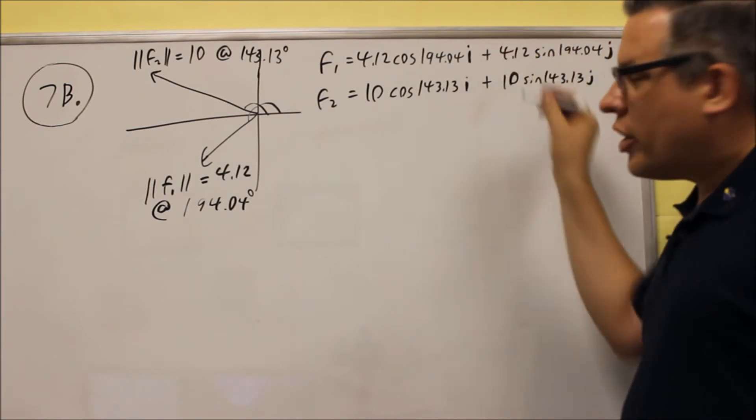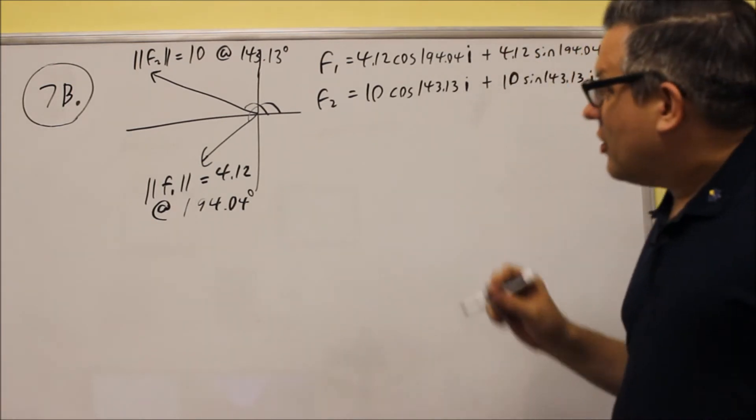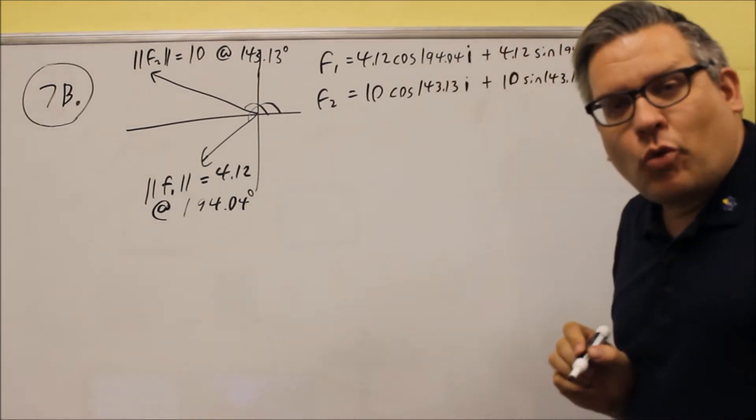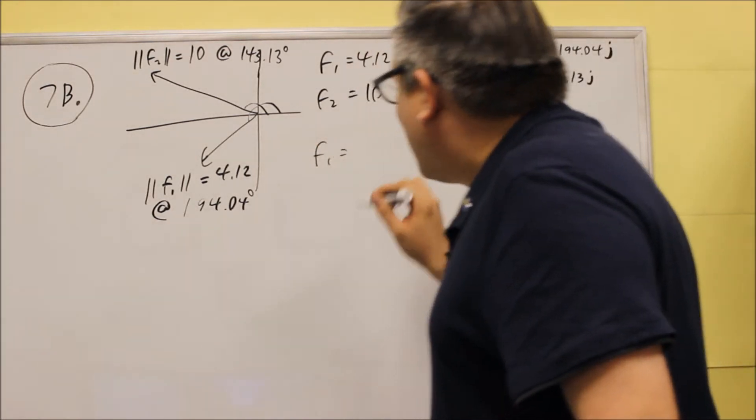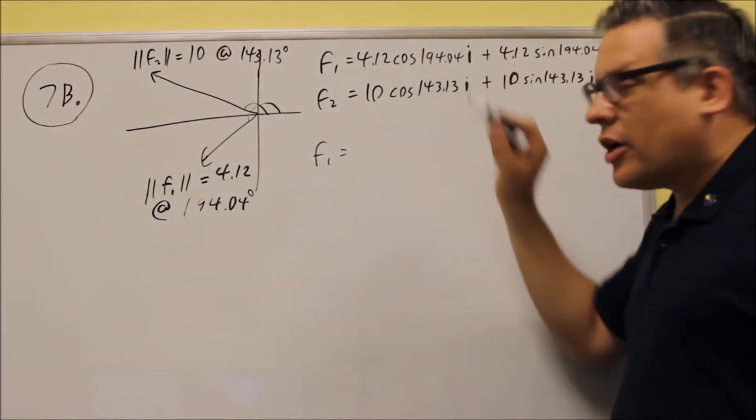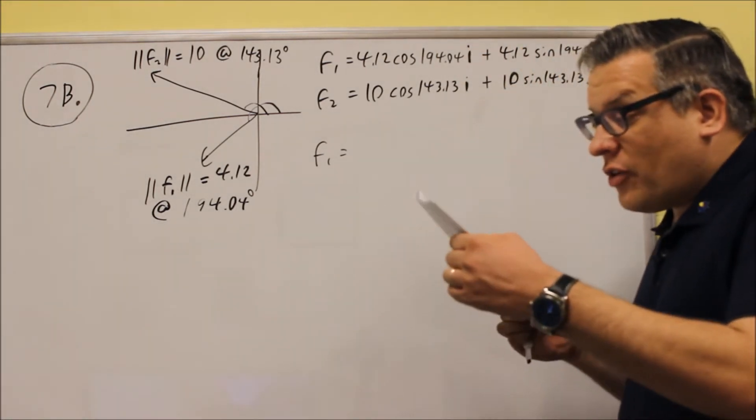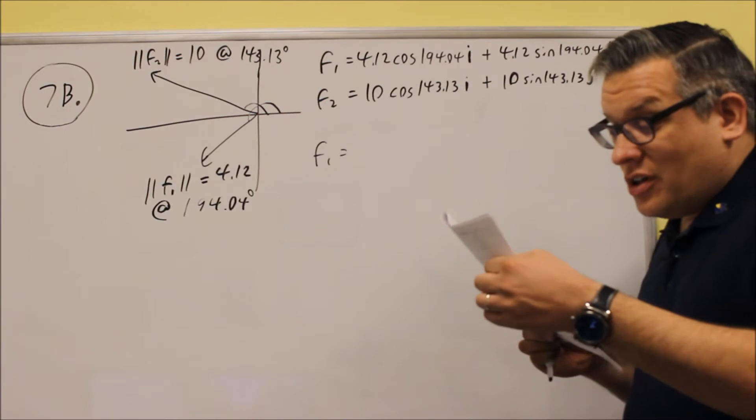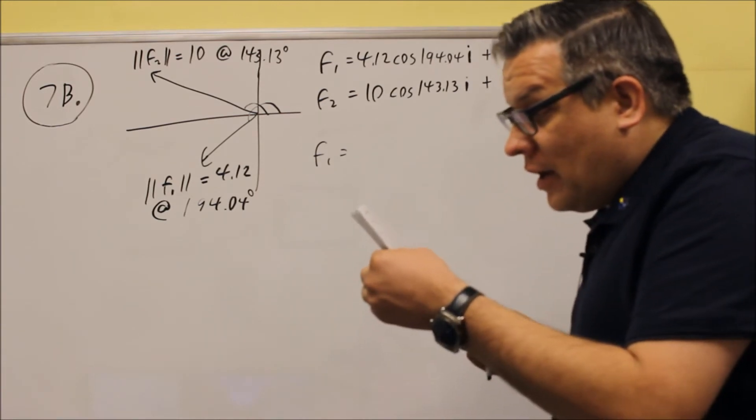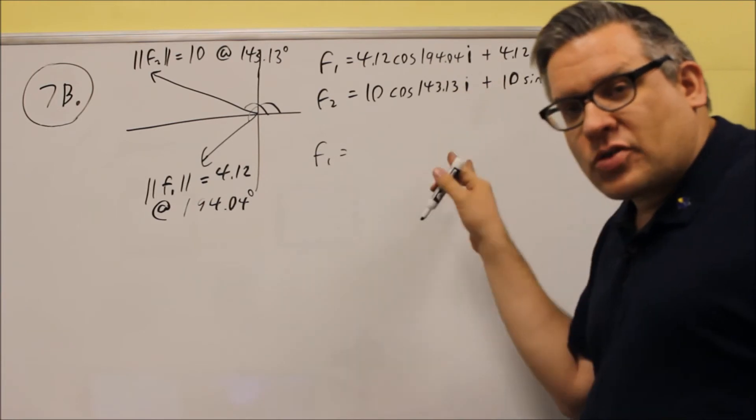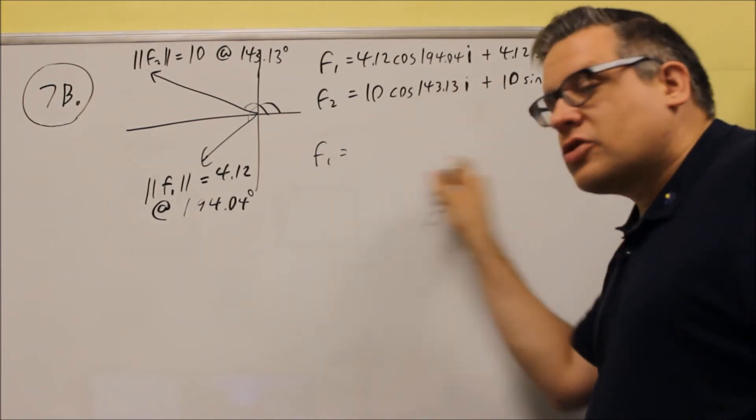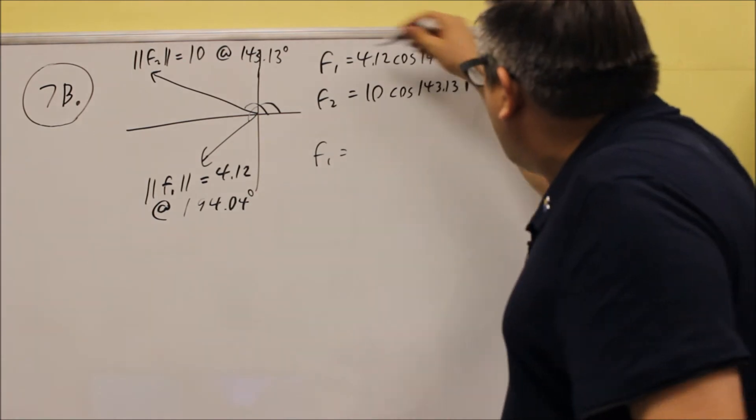So that would be written out in component form. So we need to take all this, we have to turn it into decimals by using our calculator. On a test, it's okay to use two decimal places for everything when you're writing out the decimal equivalents. Now, something interesting happens when you work this out.